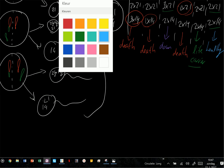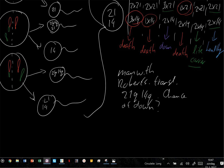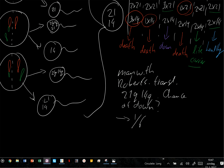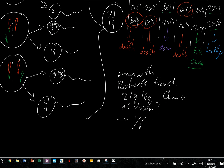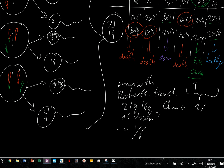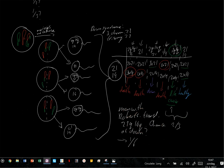So to answer the question: a man with a Robertsonian translocation 21Q;14Q has a 1 in 6 chance of a child with Down syndrome overall. The chance that a living child will have Down syndrome is 1 in 3. The chance of a living child being a carrier is also 1 in 3. And the chance of a completely healthy child is 2 in 3. Robertsonian translocation 21;14 explained.